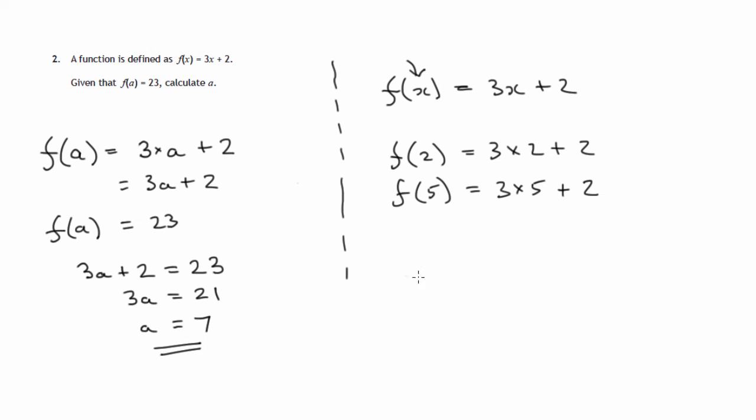We can just check that when we put 7 into this function. Multiply 7 by 3 and add 2. We'll get 21 + 2, which is 23. That's what we're supposed to get. We're told to find the number a that goes into this function so that 23 comes out, and certainly the number 7 does the trick.